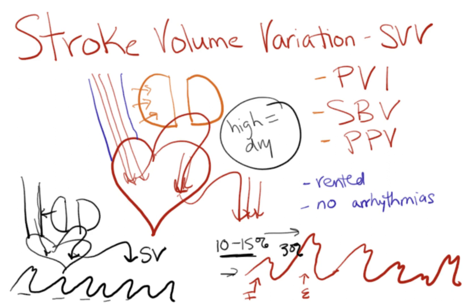So a high percent stroke volume variation higher than 15 percent means that you're dry and you should give fluid. So as promised, let's talk about why you need to be vented and not have arrhythmias in order to have a reliable measure of stroke volume variation.